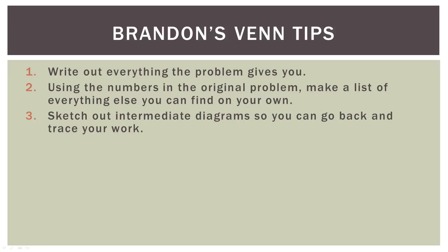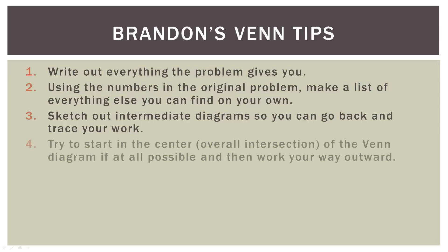Number three: sketch out intermediate diagrams on your own so you can go back and trace your work. In this video I had a Venn diagram for every step so I could go back and see how the parts go together — so make diagrams along the way. Number four: try to start in the center, which is the overall intersection, if at all possible, and then work your way outward. The triple intersection is the most specific region, and you can use it to find larger parts as you spiral outward.